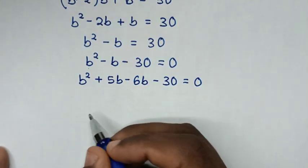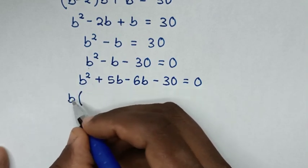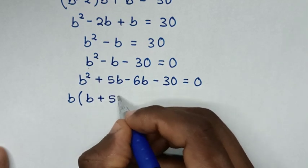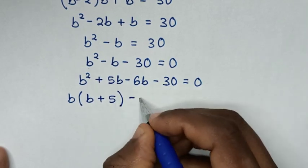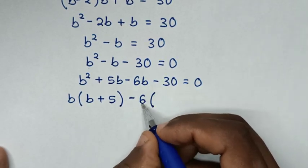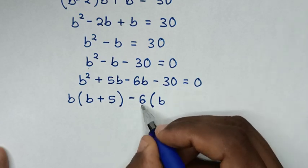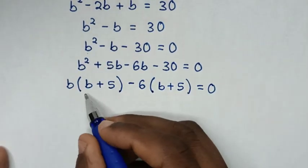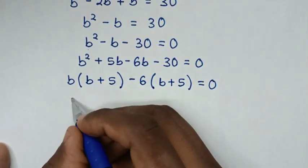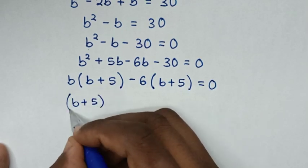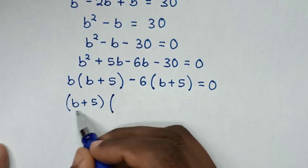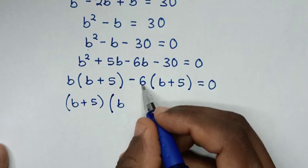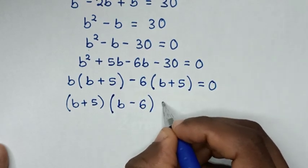In the next step, B is common, so we take B out of the bracket: B(B plus 5). Then negative 6B is common: negative 6B divided by negative 6 is B, and negative 30 divided by negative 6 is positive 5, giving minus 6(B plus 5) equals 0. Then B plus 5 is common, so we take B plus 5 out to get (B plus 5)(B minus 6) equals 0.